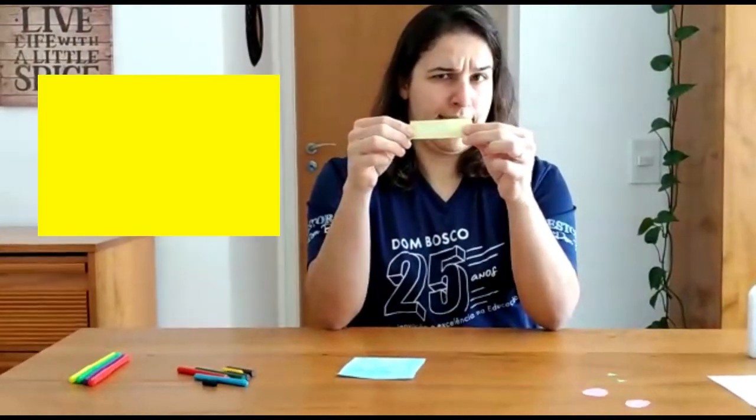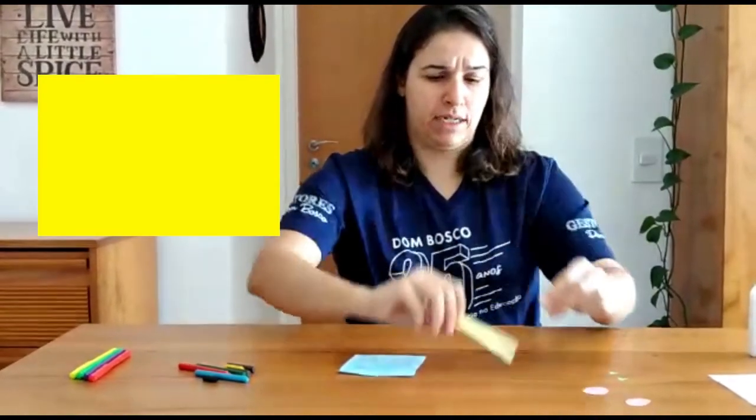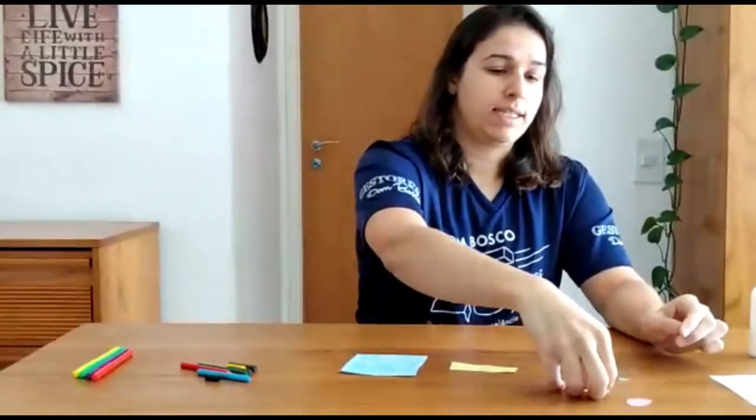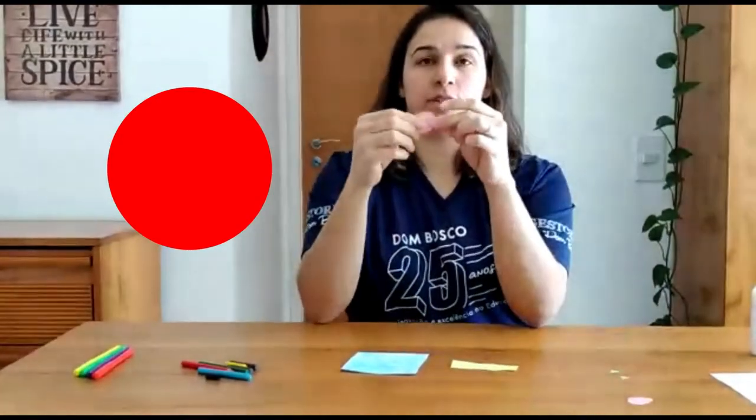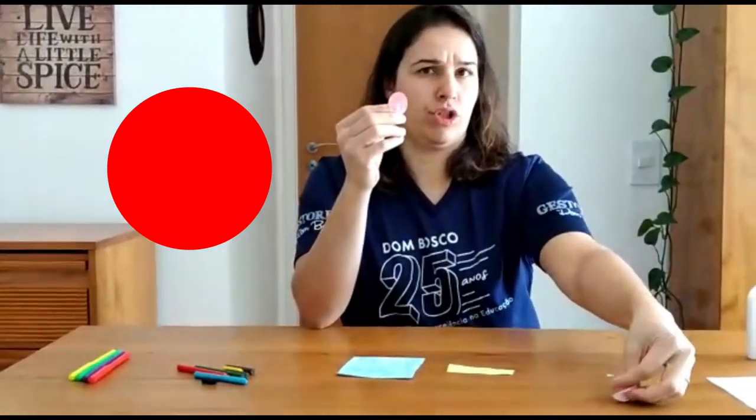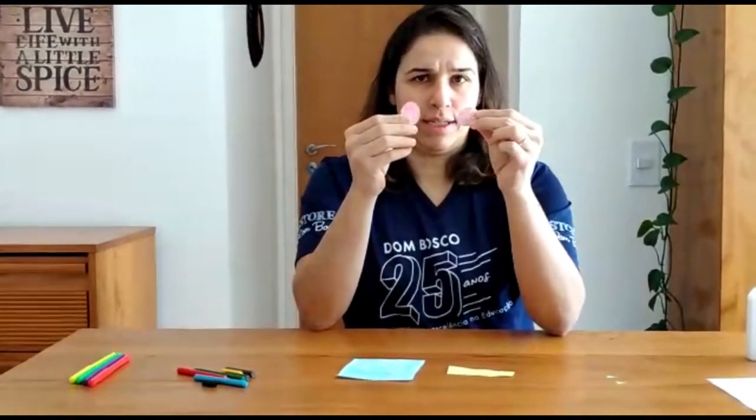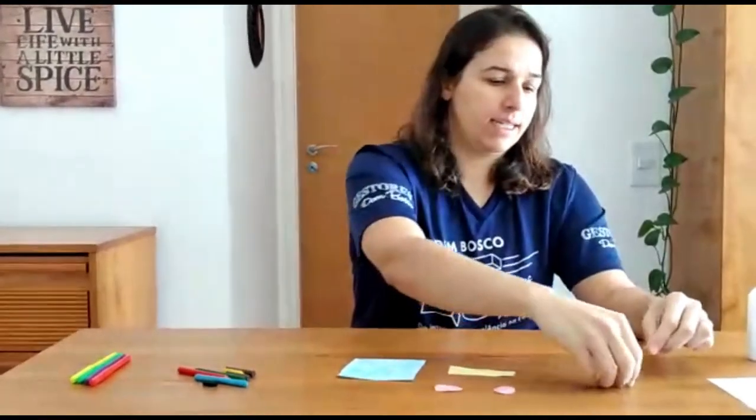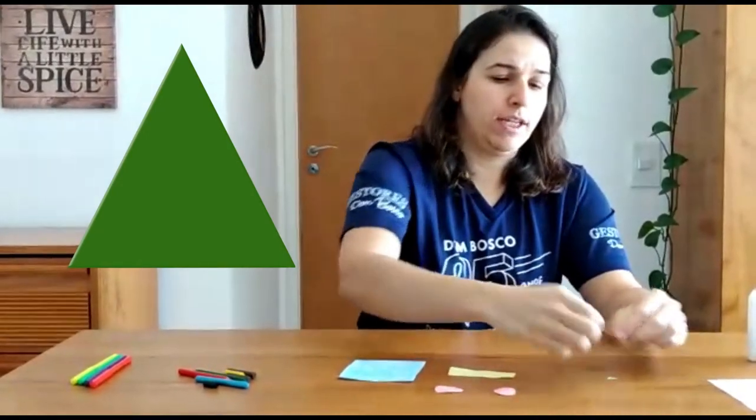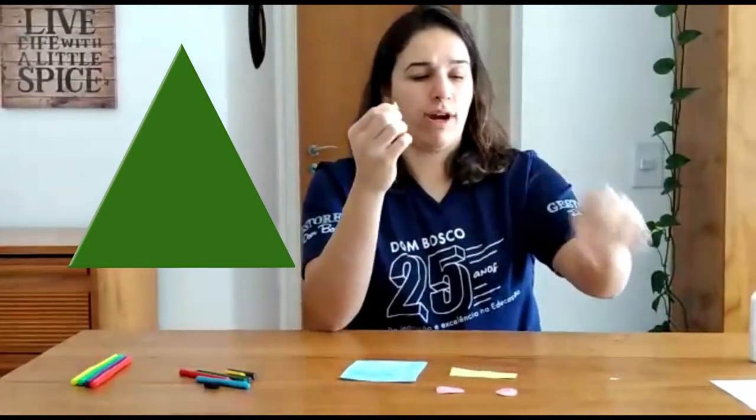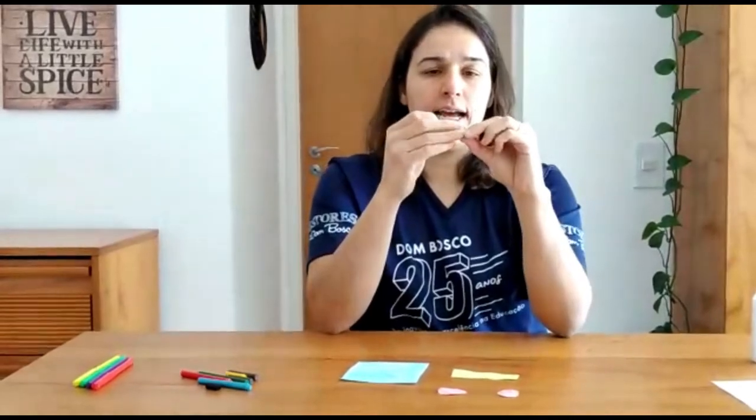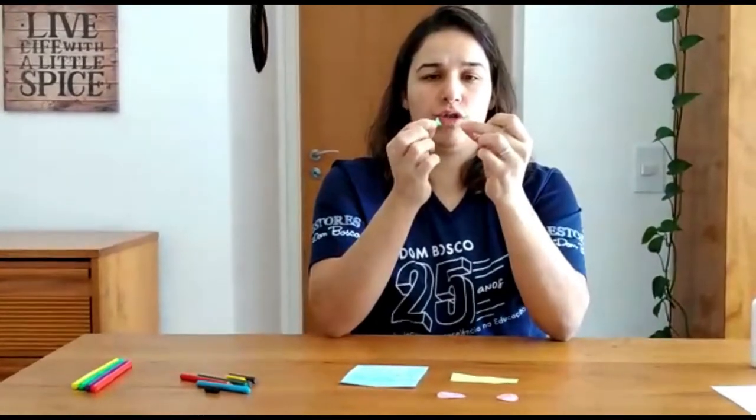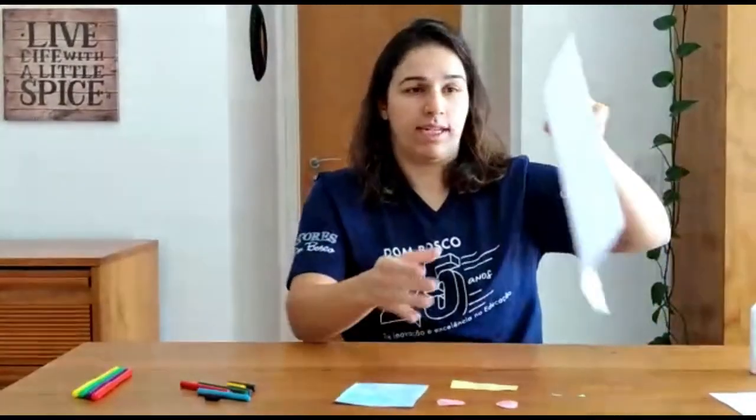This is a rectangle. All right, circle. Here we have two circles. And triangle. Here we have one triangle and another triangle, two triangles. All right, very good. Now let's go take a paper.